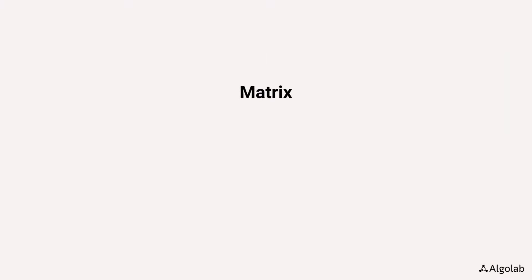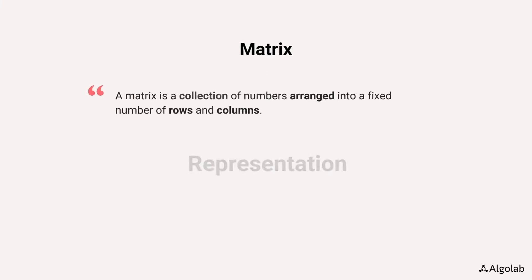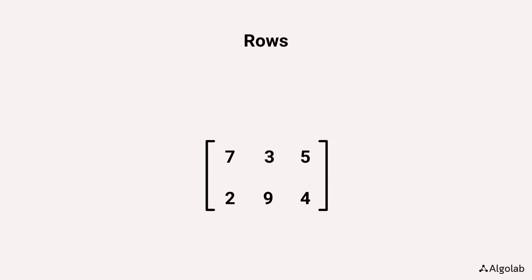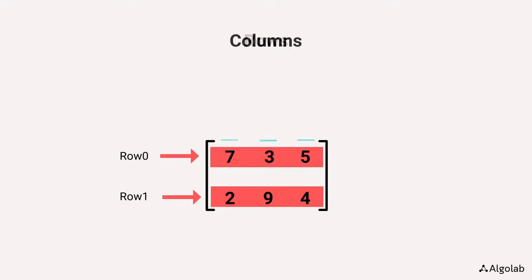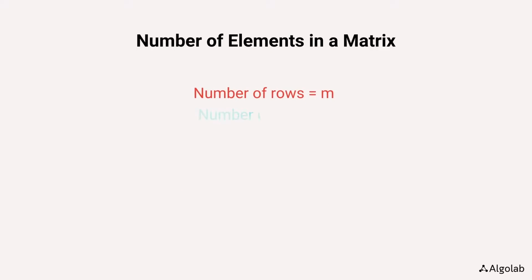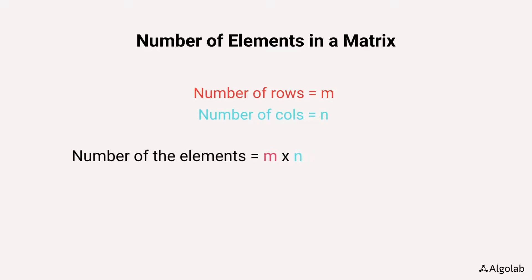Before jumping onto our first problem, let's talk about a matrix and how it can be represented in a programming language. A matrix is a collection of numbers arranged into a fixed number of rows and columns. The horizontal levels form rows while vertical levels form columns. If a matrix has m rows and n columns, then the number of elements in it will be m by n, also called the order of the matrix.